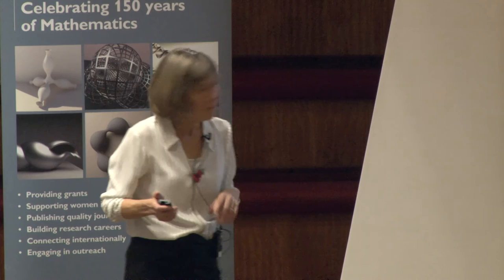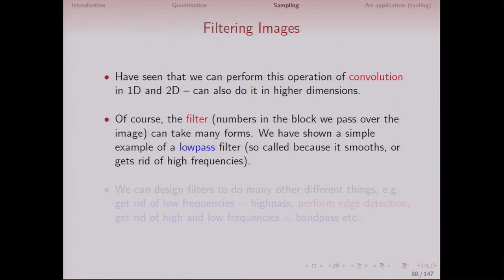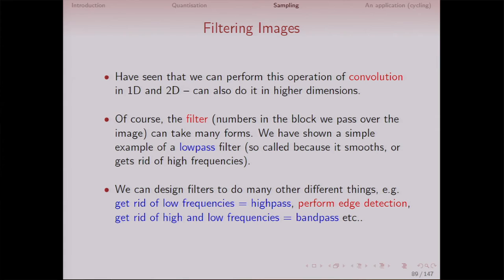I can do filtering in 1D, 2D, and higher dimensions. That Gaussian, because it gets rid of high frequencies, is called a low-pass filter — it lets low frequencies pass. I can design filters to do other things: get rid of low frequencies (high-pass), get rid of high and low frequencies (band-pass), or detect edges. So I can do all kinds of filter design — it's generally about choosing some shape to convolve with my image.